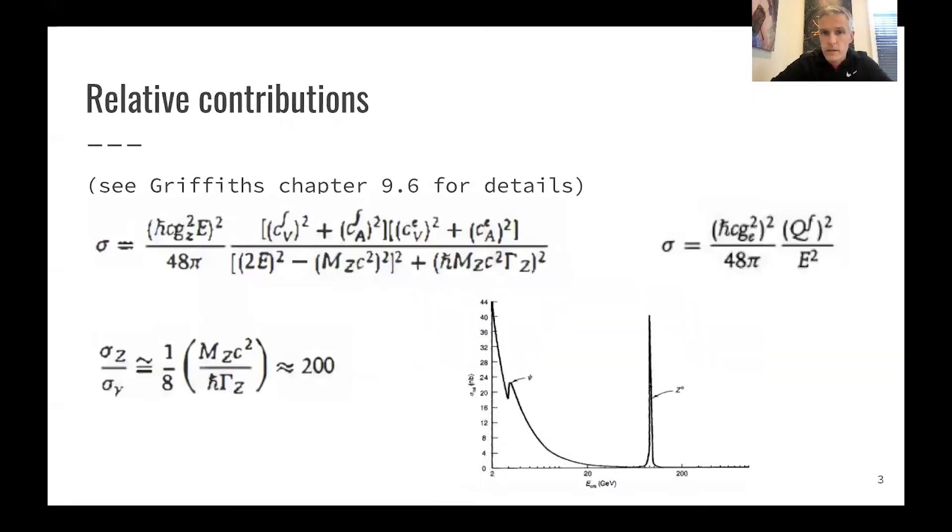So if we want to calculate the cross-section and study the cross-section of the center of mass energy, we see a number of interesting effects. At low energies and at very large energies, the cross-section runs with one over the energy squared. But at the mass of the z-boson, we see this enormous resonance here.